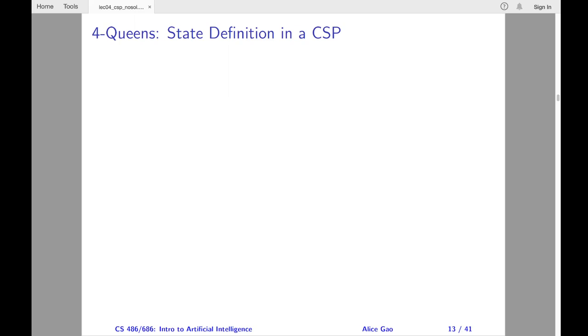Here's the first idea that I came up with. We can define one variable for each queen. The variable stores the row and the column positions of the queen. The domain for each variable contains 16 possible positions for this queen. Our constraints are: no two queens can be in the same row, the same column, or the same diagonal.